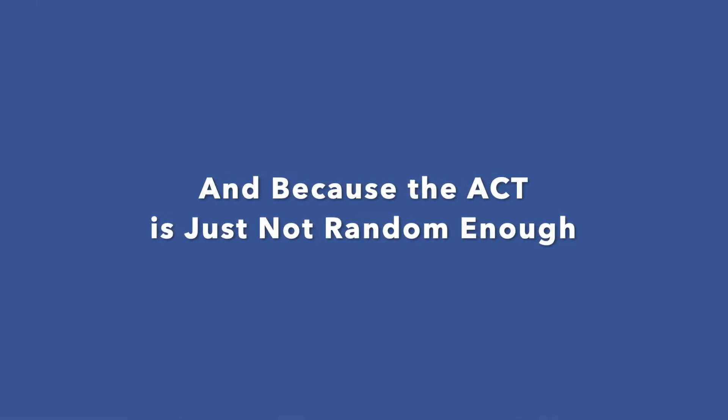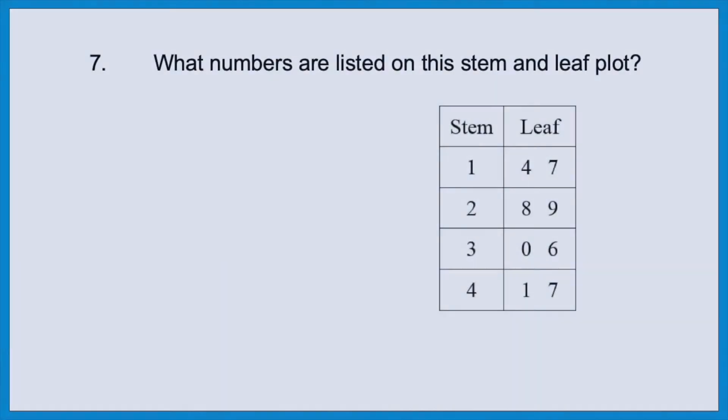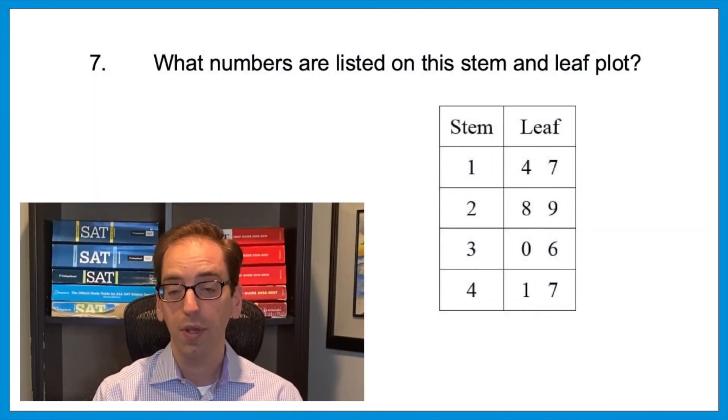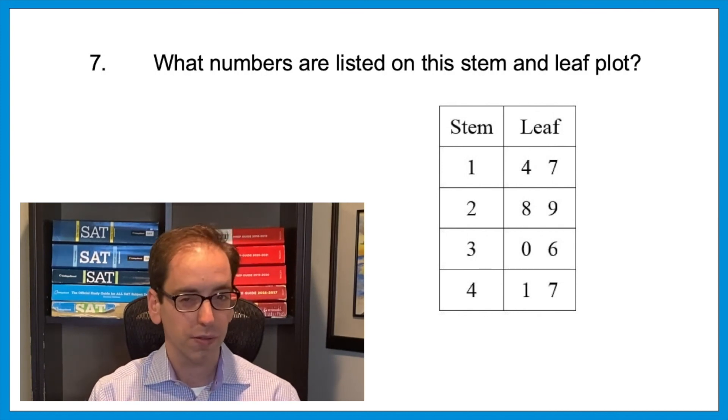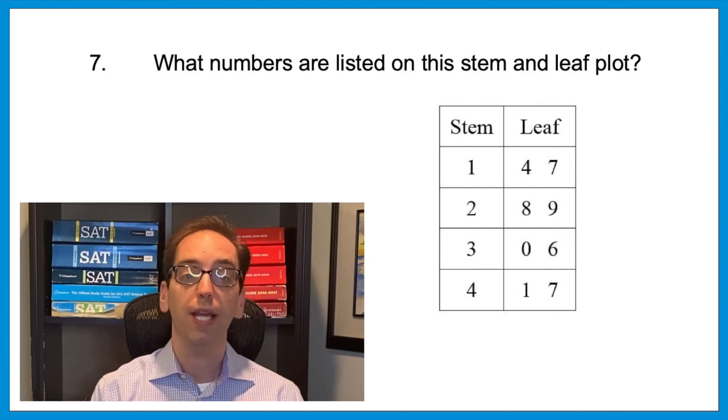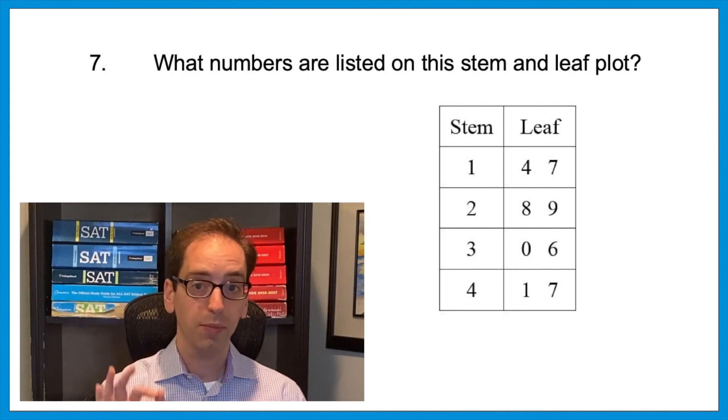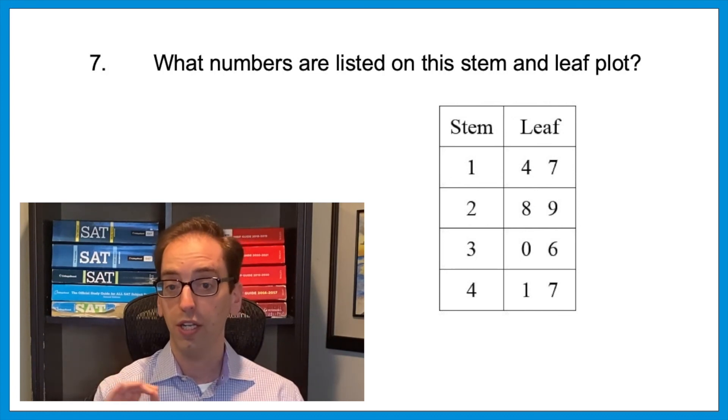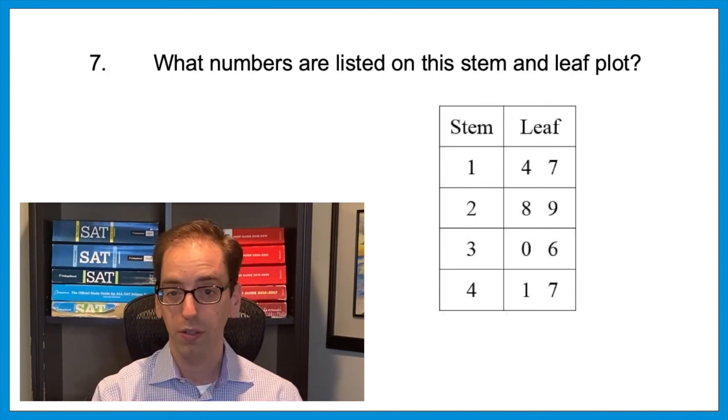And finally, let's look at a graph that the ACT will occasionally throw in as well. Question 7: What numbers are listed on this stem and leaf plot? So a stem and leaf plot looks much more complicated than it is. It's a simple way of listing numbers in half the time. So in the stems column, that would be the tens digit. And the leaf column represents each corresponding ones digit.